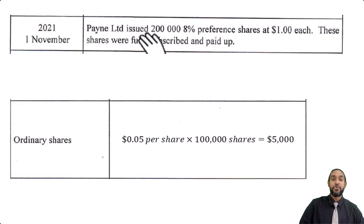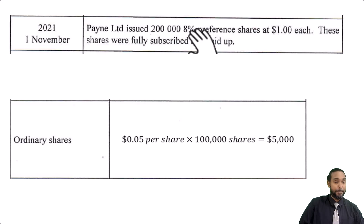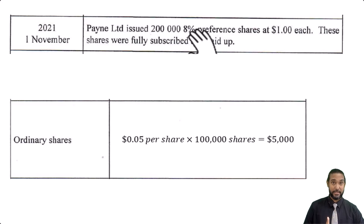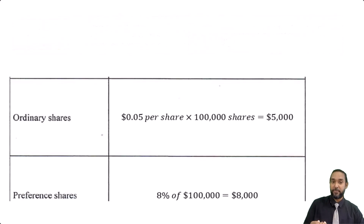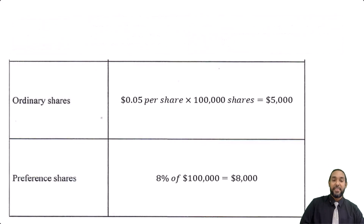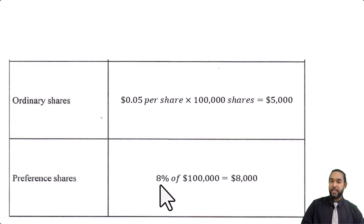For the preference dividend: 200,000 preference shares were issued with an 8% dividend rate. The preference shares have a par value of $0.50, so 200,000 × $0.50 = $100,000 is the total par value of preference shares. You then apply the 8% rate: 8% × $100,000 = $8,000 paid out in preference dividends. That's it for Part D.